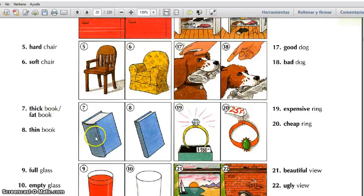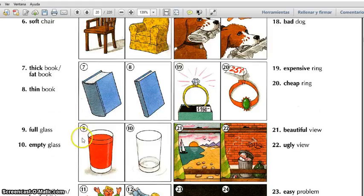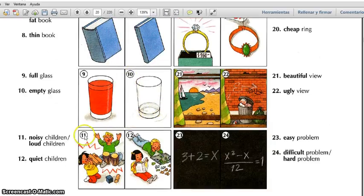Number seven: thick book, fat book. Thick, fat. Number eight: thin book. Thin. Number nine: full glass. Full. Ten: empty glass. Empty. Eleven: noisy children, loud children. Noisy, loud. Number twelve: quiet children. Quiet.